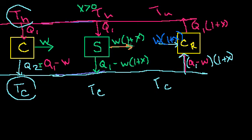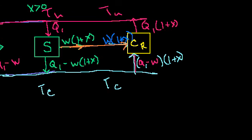He produces w times 1 plus x. And that just happens to be the amount of work that you need to operate your engine. So you just feed that into there. So what's the net effect of these two engines?